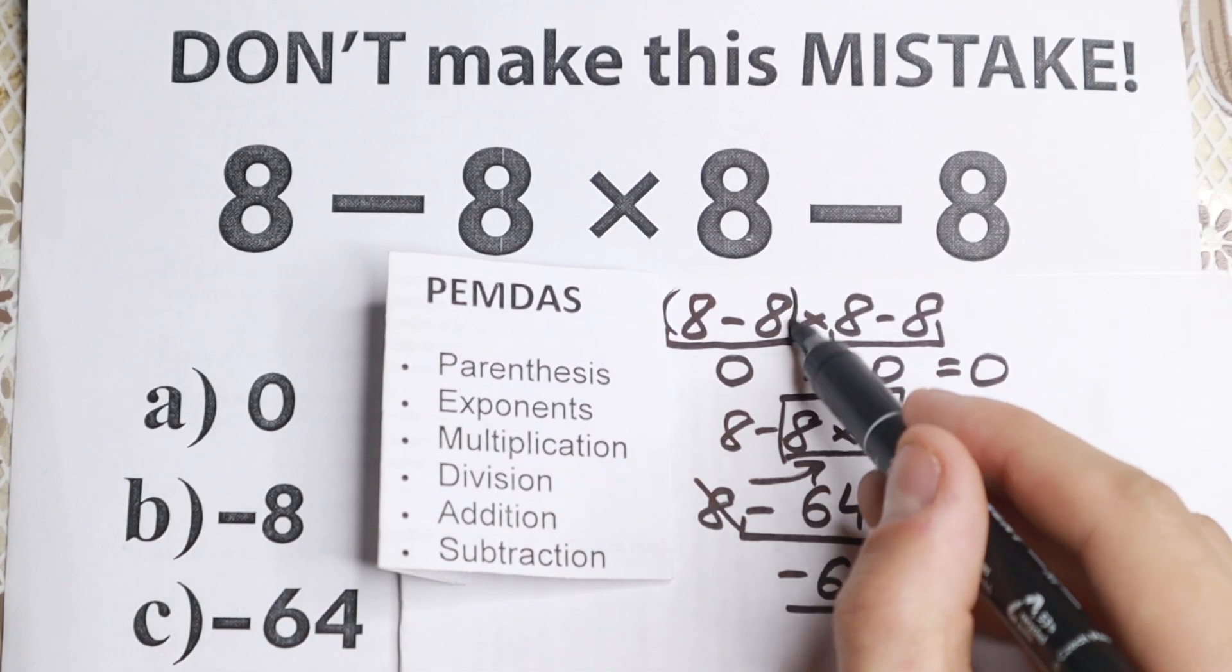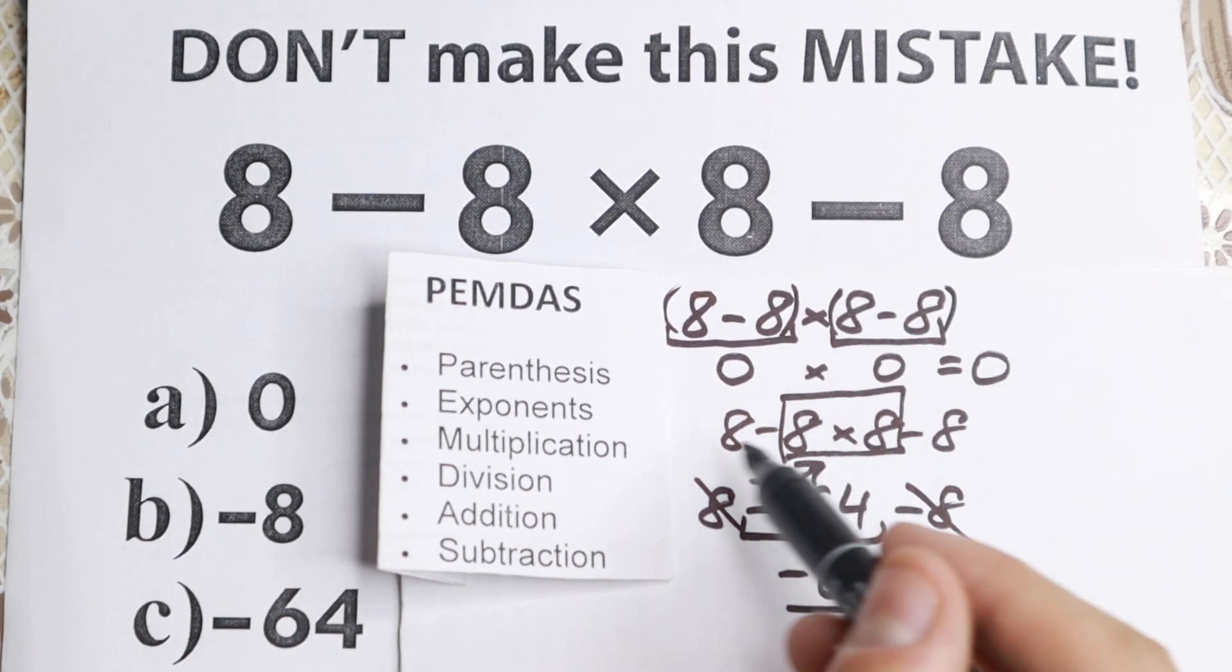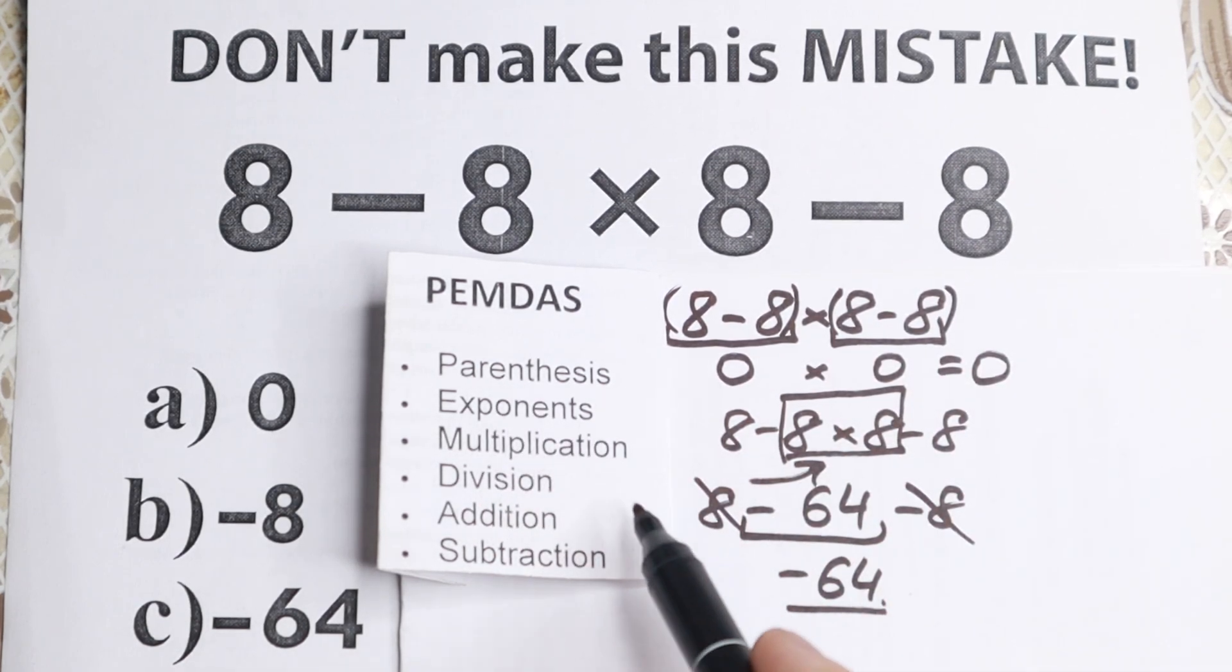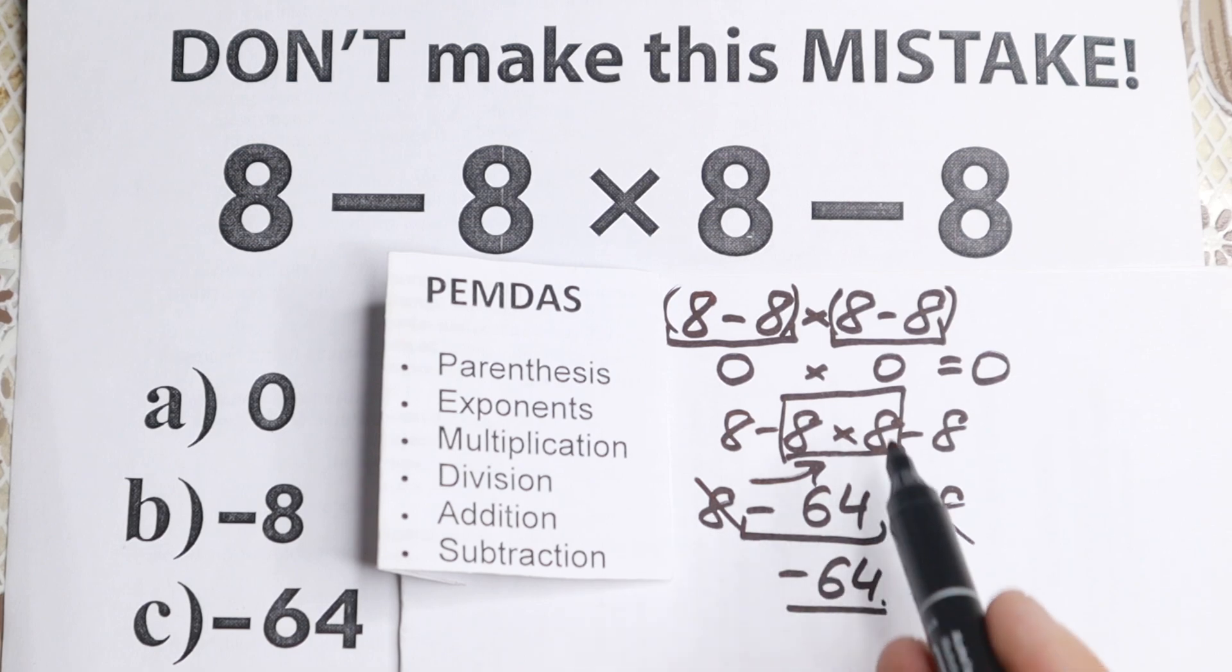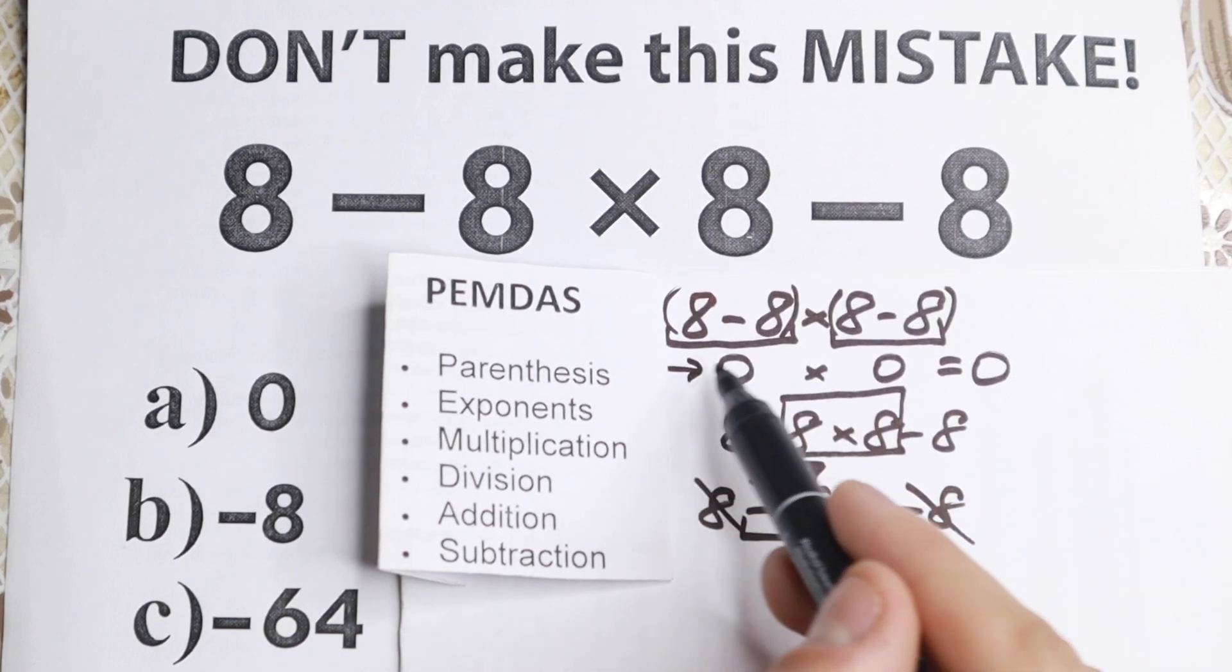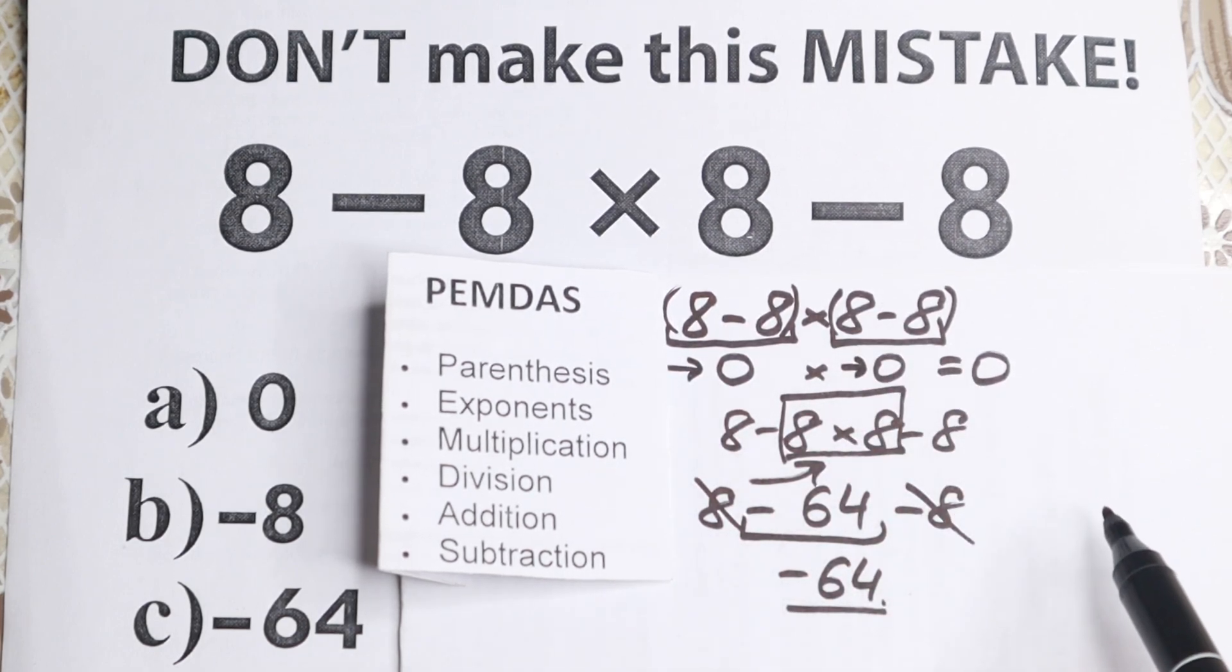Because if we put parentheses right here it will be a correct answer, because we need to start with these parentheses first. Parentheses is before multiplication. So we start with parentheses equals 0 and right here equals 0 as well. And then multiplication, because this is the third step.